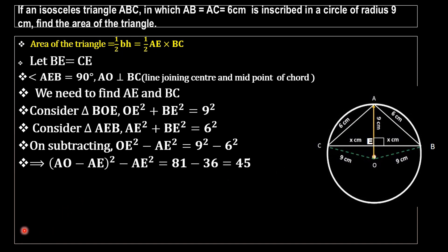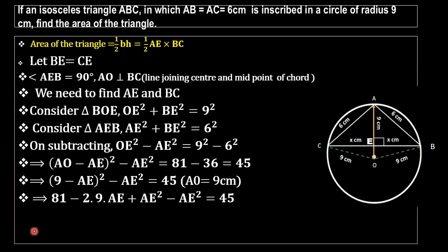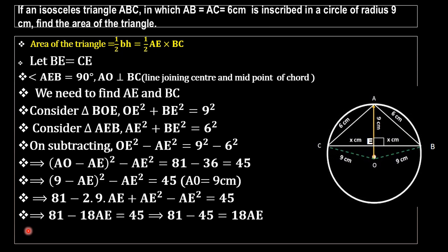Since AO equals 9 cm, we substitute to get: (9 minus AE) squared minus AE squared equals 45. On expansion: 81 minus 18AE plus AE squared minus AE squared equals 45. The AE squared terms cancel, giving: 81 minus 18AE equals 45. Taking 45 to the left side: 81 minus 45 equals 18AE. So 36 divided by 18 gives AE equals 2 cm.